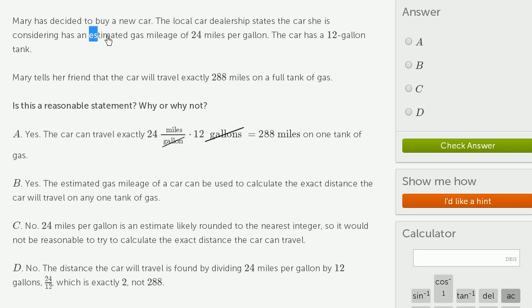dealer told her that it has an estimated gas mileage of 24 miles per gallon. Here, to do this, she would have to assume that the car can travel exactly 24 miles per gallon. There's a big difference between an estimate and being exactly 24 miles per gallon.